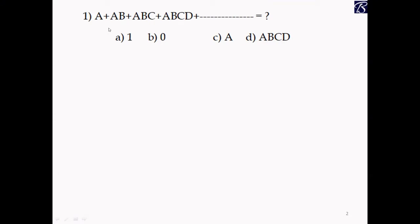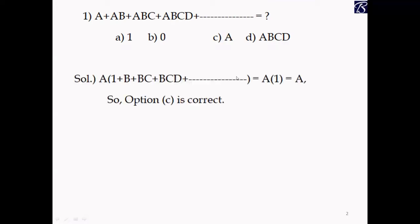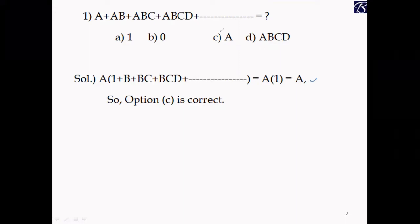Problem 1: An expression is given — A + AB + ABC + ABCD + and so on — equal to how much? We need to simplify this. If you take A as a common term, you get A times (1 + B + BC + ...). We know that 1 plus anything is 1, so applying the identity law, the answer is A. Option C is correct.